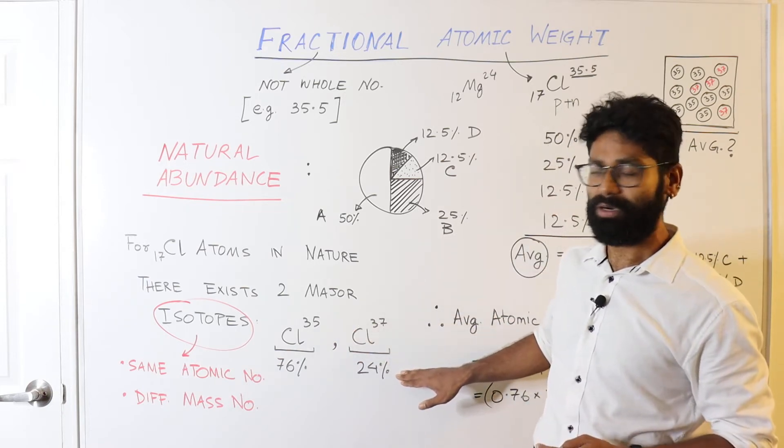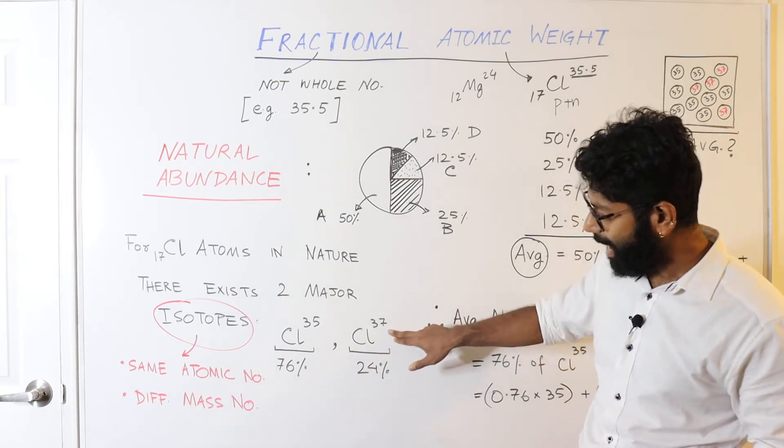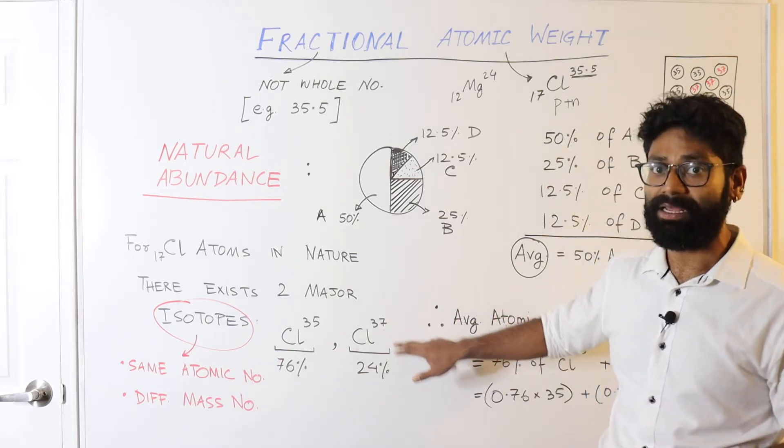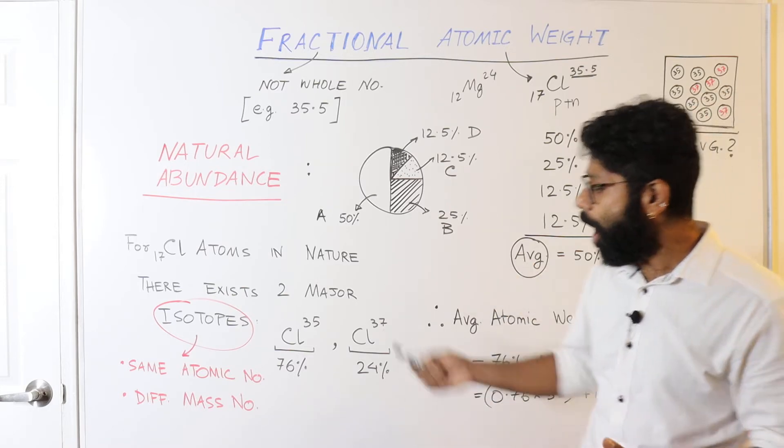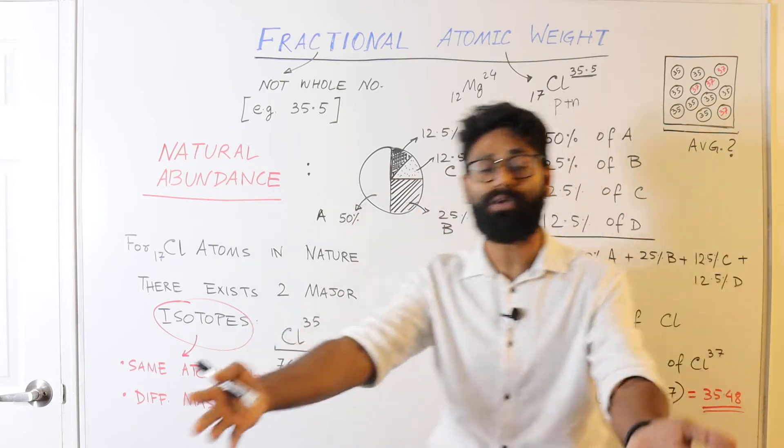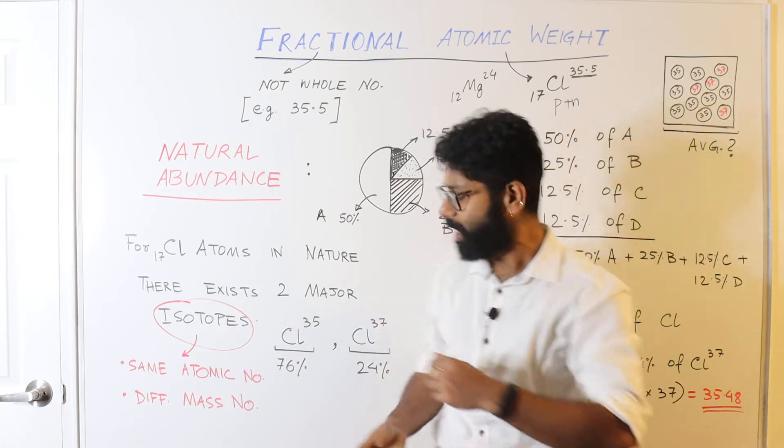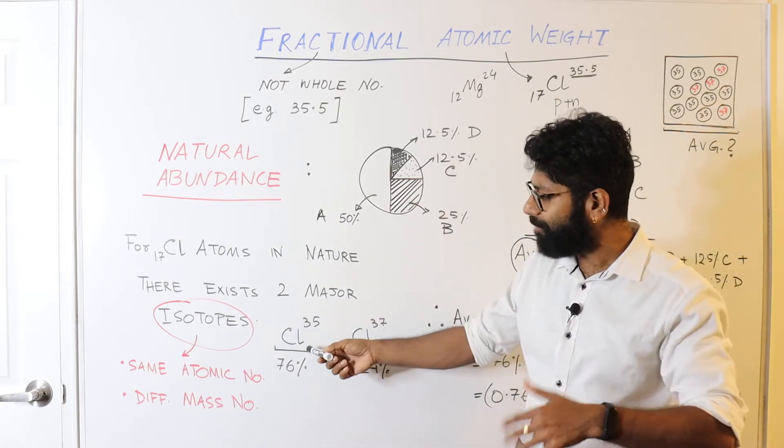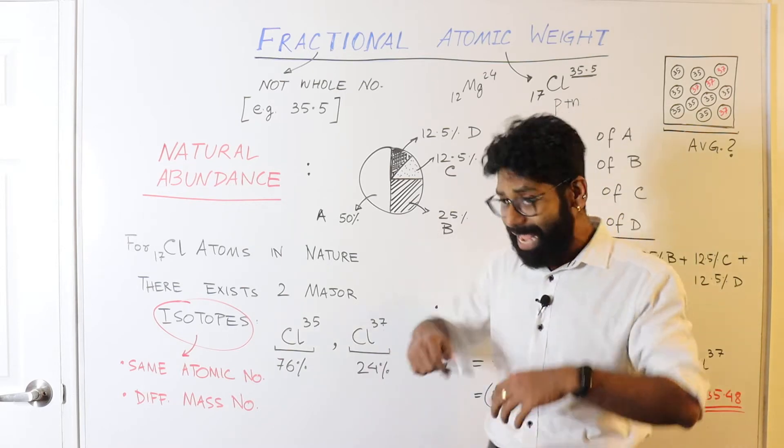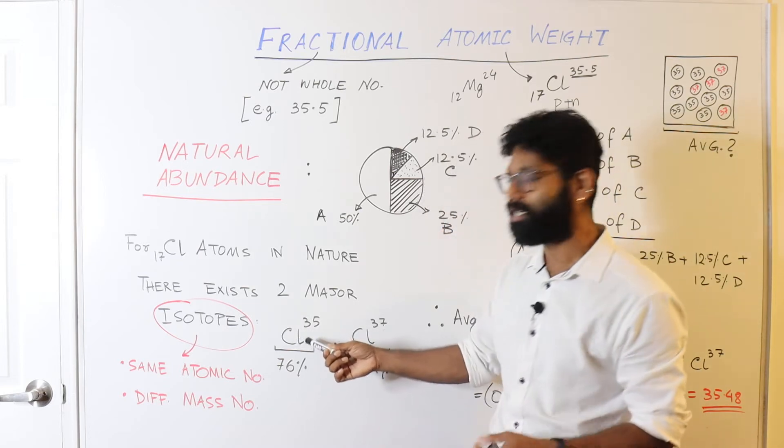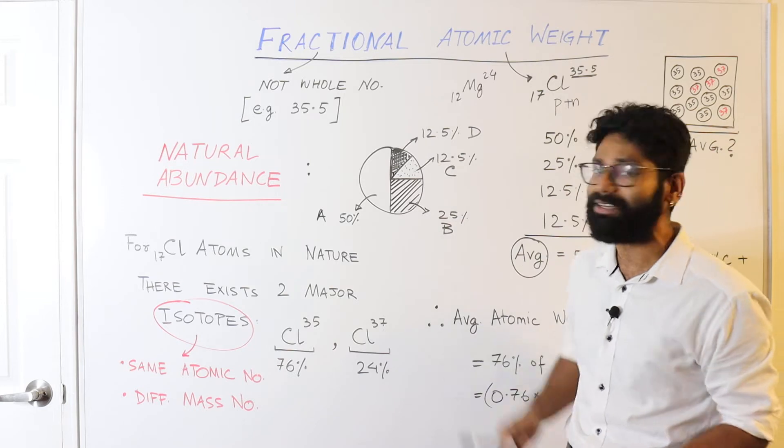Now if you collect all the chlorine atoms in the universe, you will find out that 76% of all the chlorine atoms in the universe have the atomic weight of 35, while the rest 24 or close to 24 atoms of chlorine in the universe will have the atomic weight of 37.